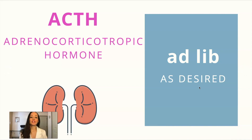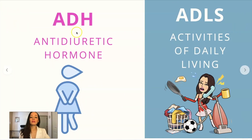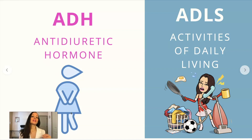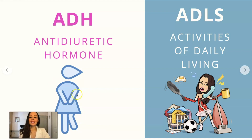ACTH is adrenocorticotropic hormone. You may see in the chart that a patient may get out of bed at lib. The way I remember this is it almost sounds like 'at liberty,' and it is derived from Latin. ADH is anti-diuretic hormone. The process of diuresing is voiding — getting fluid out. So anti-diuretic hormone retains water. ADLs you will see a lot — patient unable to do ADLs or is able to do ADLs. ADLs stands for activities of daily living.